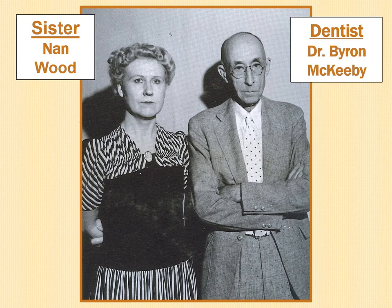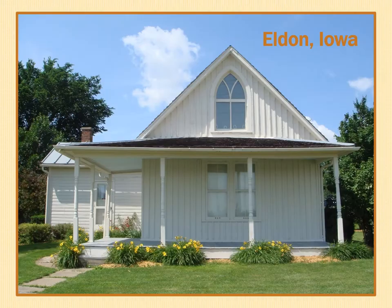Now you've seen the people who Grant painted in the foreground of his canvas. Let's discover what he chose to be in the background. In fact, he chose the background even before he selected Nan and Byron — that's how important it was. He drove around his neighborhood until he found a house that really caught his attention, and then he took this photograph.